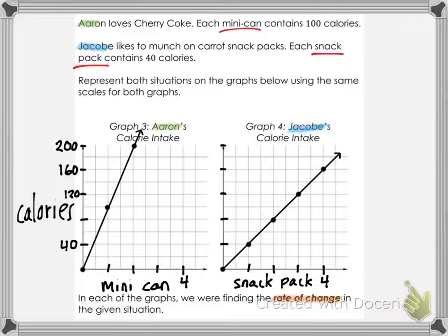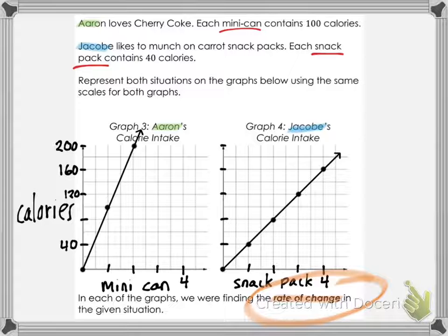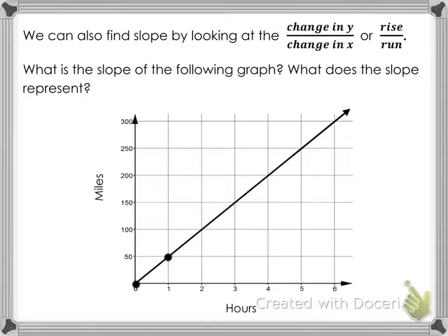Jacoby — same deal. After no snack packs he has had zero calories; after one snack pack he is at 40. Each additional snack pack adds 40 calories: after two snack packs we're at 80, then 120, and so on. Aaron, whose snacks had more calories, resulted in a steeper slope. That is the rate of change — we were finding the speed at which both situations were changing. The word 'rate' is talking about the speed: how quickly does this change occur?